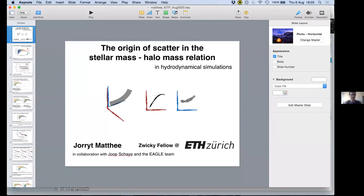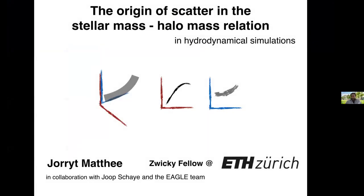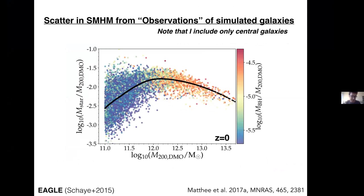Hello everyone. I was not at the original meeting, so I'll introduce myself. My name is Jorrit Matej, a Zwicky Fellow at ETH in Zurich. I'll present results on the origin of scatter in the stellar mass–halo mass relation and also on the star formation rate–stellar mass relation, because they are somewhat correlated. This is from hydrodynamical simulations, in particular EAGLE. I will only discuss central galaxies here, ignoring satellites throughout.